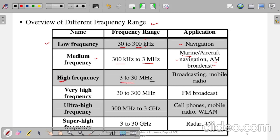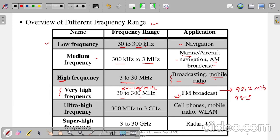High Frequency is 3 to 30 MHz and is used for broadcasting and mobile radio. Note that mobile radio here refers to walkie-talkies used by army personnel, not cell phones. Very High Frequency is 30 to 300 MHz, used for FM broadcast. If you open the FM application on your mobile, the frequency shown is in this range — typically 88 to 108 MHz. Channels like 92.7 or 98.3 refer to frequencies in megahertz.